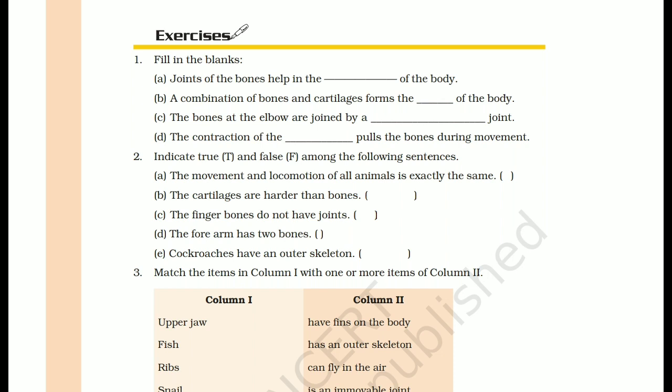Question 2: Indicate true and false among the following sentences. Statement (a): the movement and locomotion of all animals is exactly the same. As we read in the chapter, some animals fly, some crawl, some run, some only walk — so all animals' movements are different. This statement is FALSE.